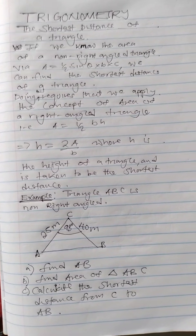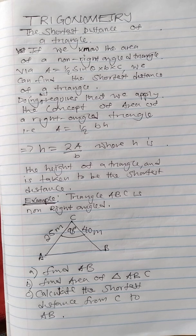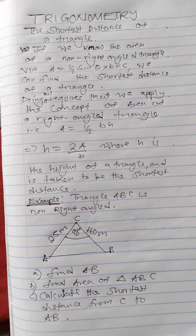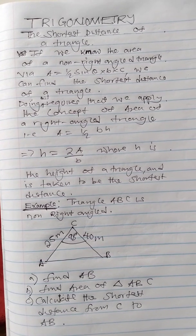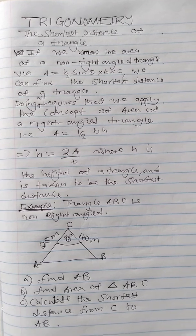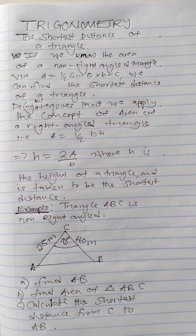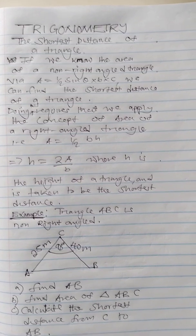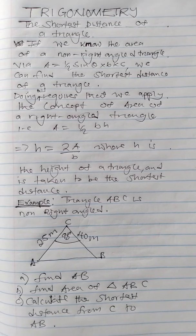So, to summarize: if we know the area of a non-right-angle triangle via that formula, we can find the shortest distance of a triangle. Doing this requires that we apply the concept of area of a right-angle triangle — that is, area equals half times b times h — which implies that height equals a over b, where h is the height of the triangle.